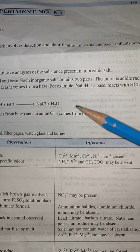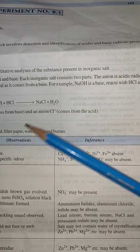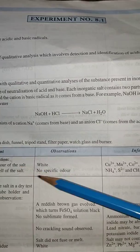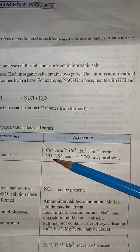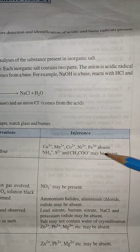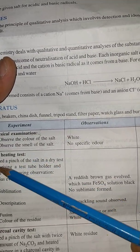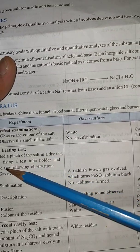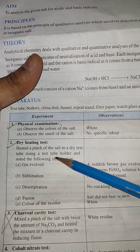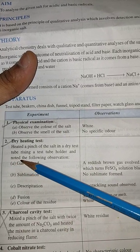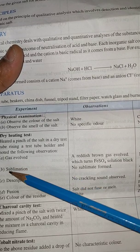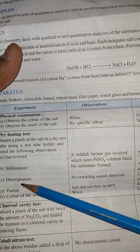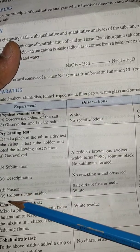Suppose we are getting a salt in which the smell is not specific like ammonia, like sulfide, like acetate, so these are absent. Now come to the dry heating test: heat a pinch of the salt in a dry test tube using a test tube holder and note the following observations: gas evolved, sublimation, decrepitation, and color of the residue.